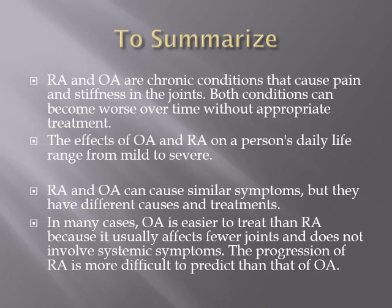To summarize: rheumatoid arthritis and osteoarthritis are chronic conditions causing pain and stiffness in the joints that worsen over time without appropriate treatment. The severity and effects on daily life vary from mild to severe, depending on age, environmental conditions, smoking, weight, and fitness. Both conditions cause similar symptoms but have different causes and treatments.